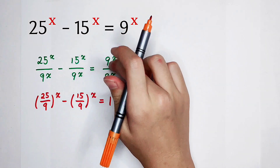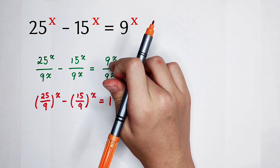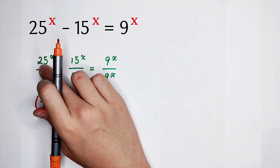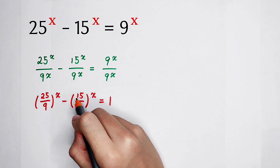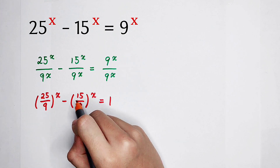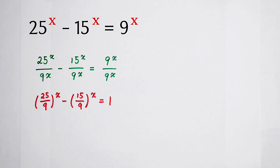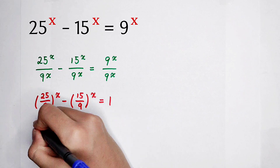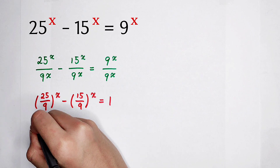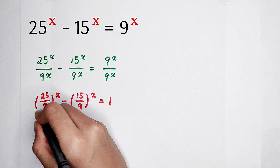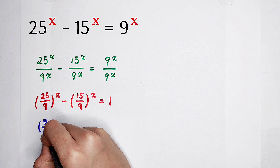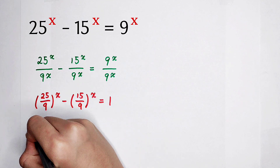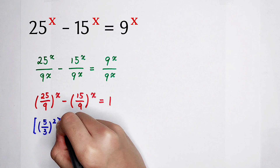These three numbers are very beautiful. 25 is 5 squared, 9 is 3 squared, 15 is 3 times 5. So we can simplify them. 25 divided by 9 to the power of x — 25 divided by 9 is 5 divided by 3, all squared, and then all to the power of x.